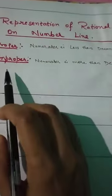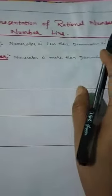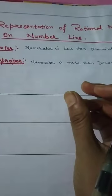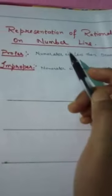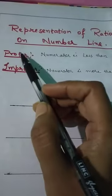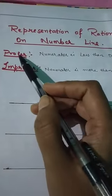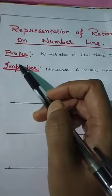Good morning students. Today's topic is representation of rational numbers on the number line — how we can represent rational numbers on the number line, and what are proper and improper fractions.